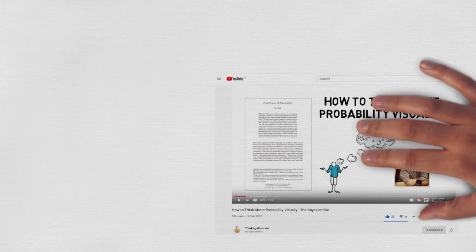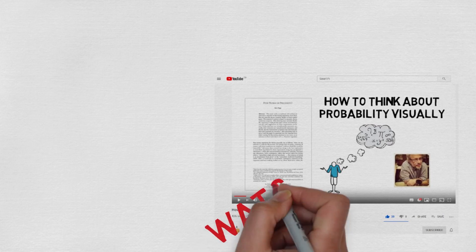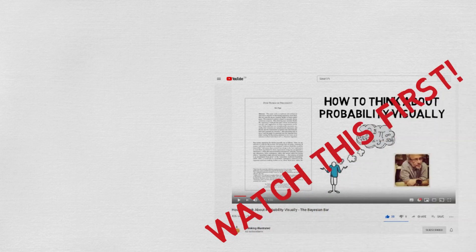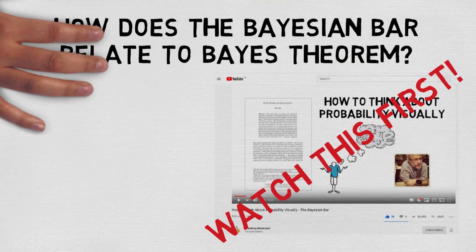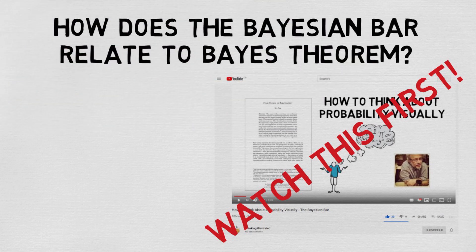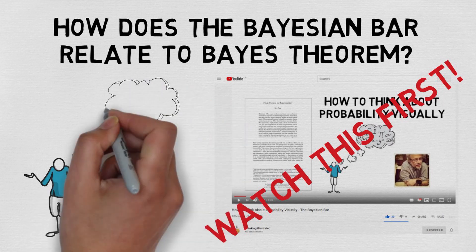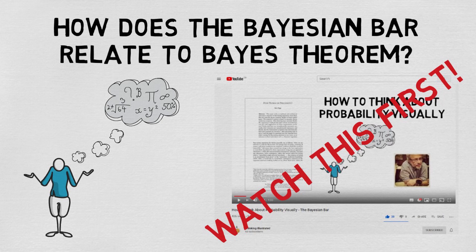In a previous video I explained how to think about probabilistic reasoning visually by using the Bayesian bar. If you haven't already seen that video I'd recommend that you watch it before continuing with this one, as I'm now going to explain how the Bayesian bar relates to Bayes' theorem. As a result, the content in this video is going to get a bit more technical, but by using the bar you'll see that it is simpler than it initially looks.